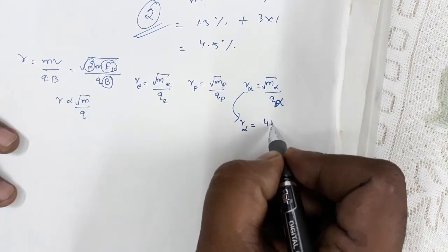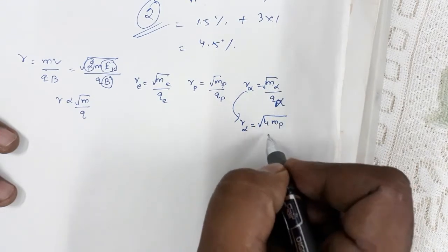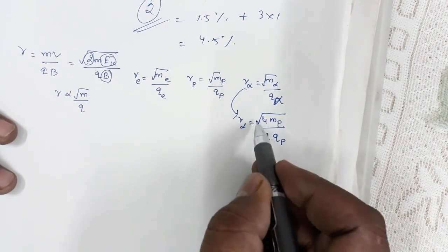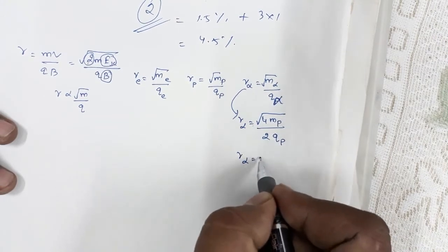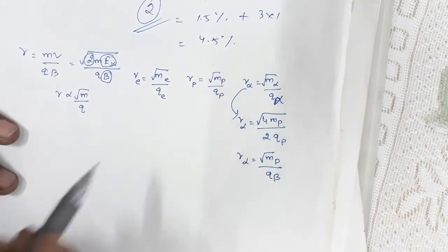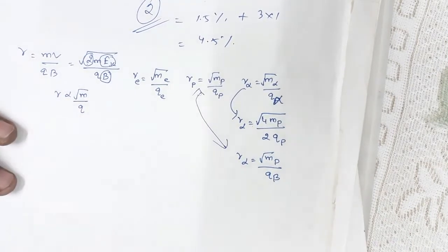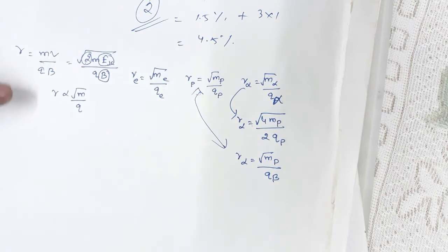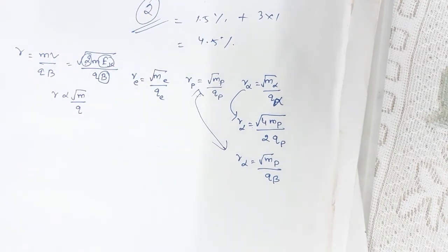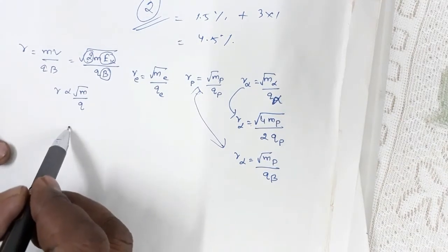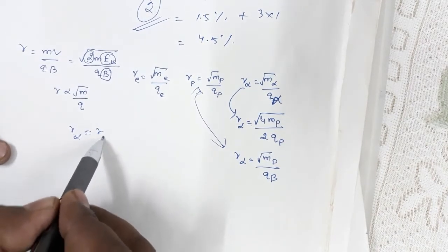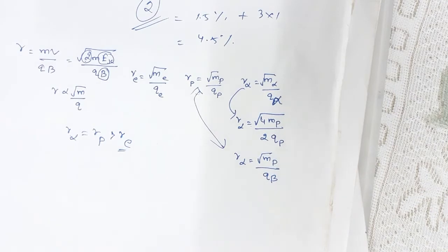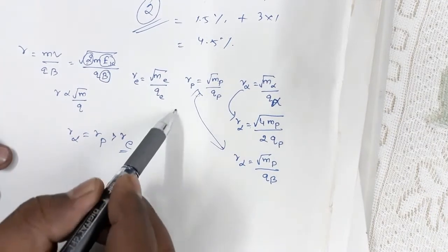For the alpha particle: m_α = 4m_p and q_α = 2q_p, so r_α = √(4m_p / 2q_p) = √(2m_p/q_p). Wait — simplifying: √4/√2 = 2/√2 = √2... actually the two and two cancel, giving r_α = √(m_p/q_p) = r_p. So r_α = r_p, and both are greater than r_e. The electron has the smallest radius. For Code C question 65, the correct option is number 1.